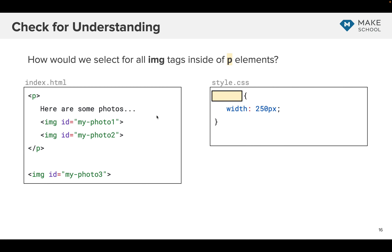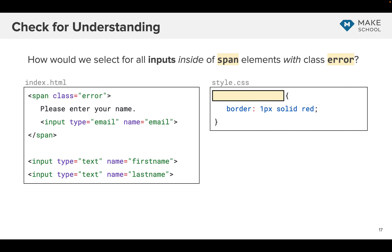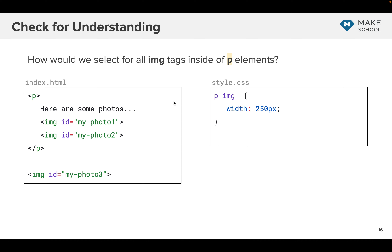Here's a quick question — how do we select image tags that are inside a paragraph? There's an image tag outside the paragraph (photo three), but we want photos one and two. The answer is we can use the descendant selector: paragraph space image. Another option would be using a class name if one existed, or writing rules for individual IDs — but the descendant selector gets them both nicely.